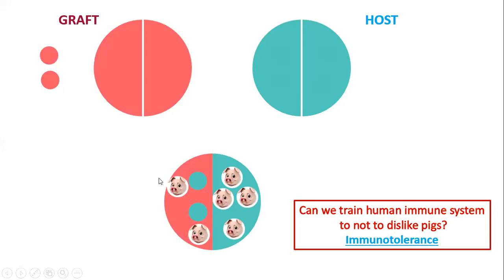Immunotolerance involves exposing pig cells in a form that the human system accepts, giving enough time for engraftment so that pig and human cells can live in harmony. Through genetic engineering, we can modify the pig graft's genes to make them more similar to humans and less likely to be rejected — thereby enhancing immunotolerance. We will look at what tools are available for this.